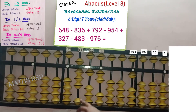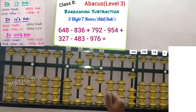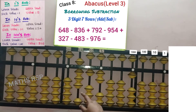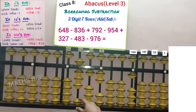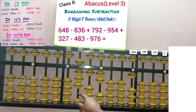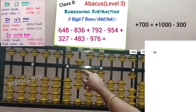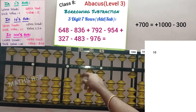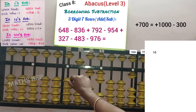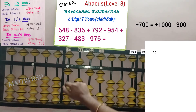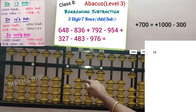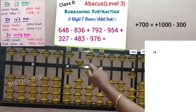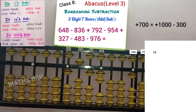From the 3rd row we need to add 792. In the 100 strad only 1 bead is available to add, hence direct addition is not possible. Apply big friend: 7's big friend is 3. We should remove that 3 here and add the bars in the next strad, that is in the 1000 strad. Which means plus 1000 minus 300 is equal to 700 added.